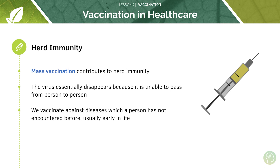There's no point vaccinating someone near the end of their life because they would have been exposed to a significant proportion of pathogens already. Our goal is to vaccinate people nearer the start of life, which is why you probably remember getting quite a few vaccines as a child compared to now.